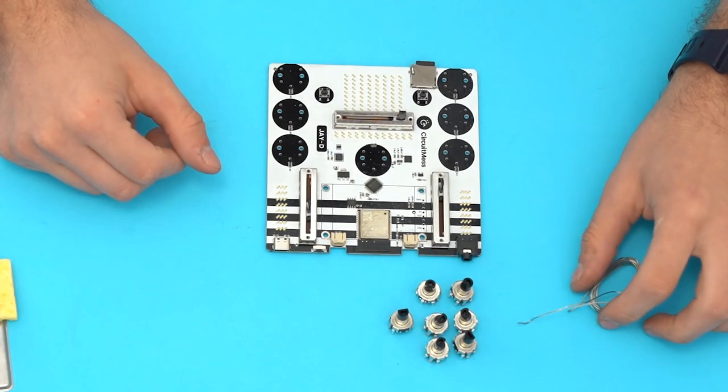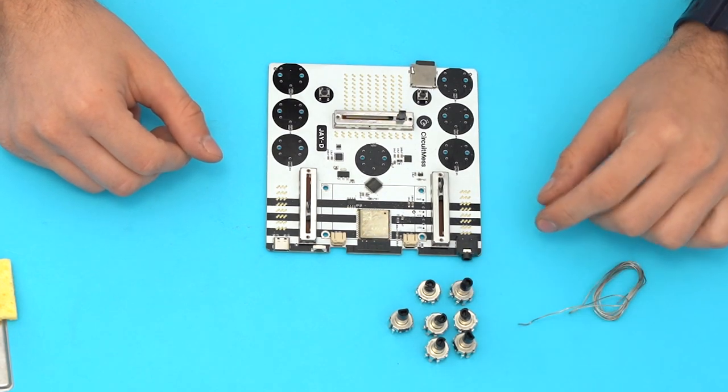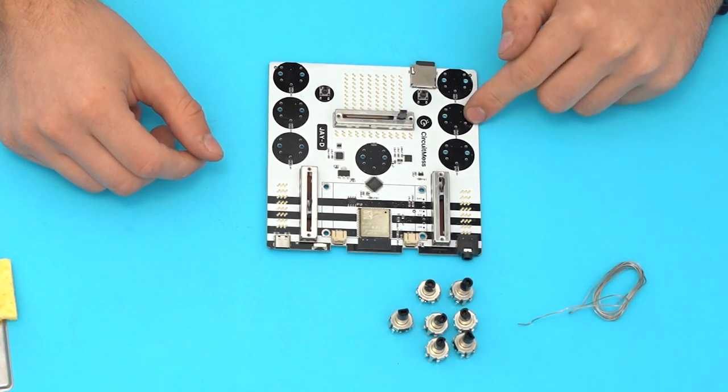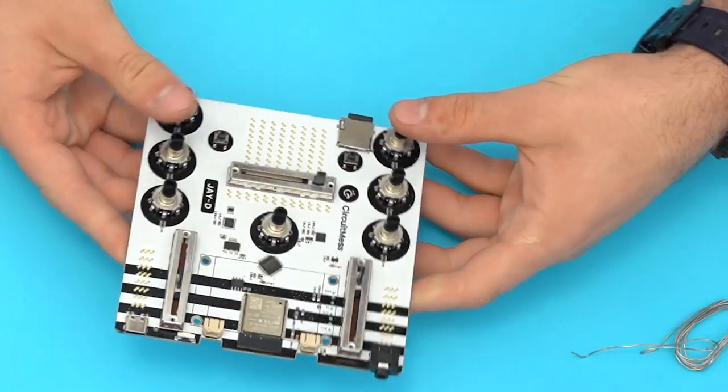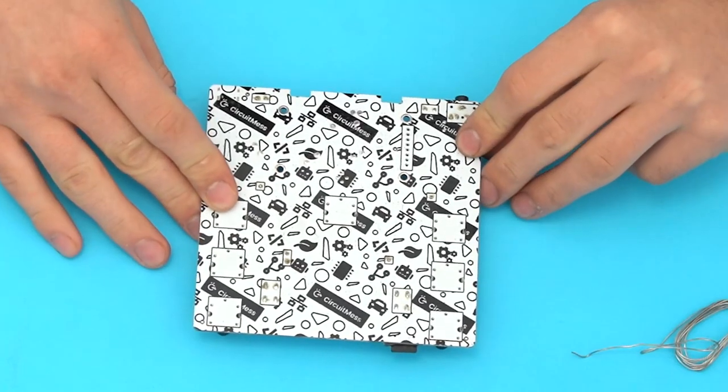Now we have the 7 rotary encoders. Their placement is marked by these black circles and should click into place easily. With all 7 of them in place, let's flip the board and solder them.